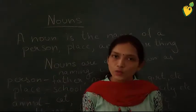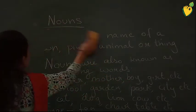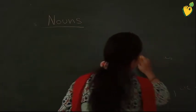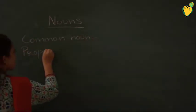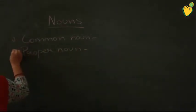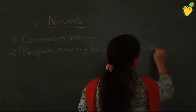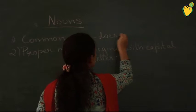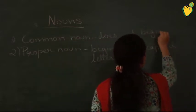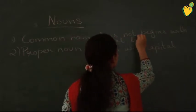So students, what is a noun? A noun is the name of a person, place, animal, or thing. Under the head of a noun come two types: one is common noun and the other is proper noun. Proper noun always begins with a capital letter. Common noun does not begin with a capital letter — it remains with a small letter.